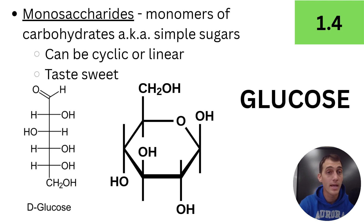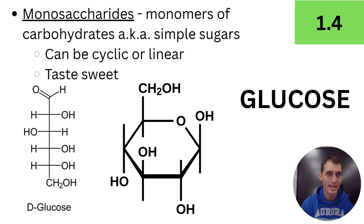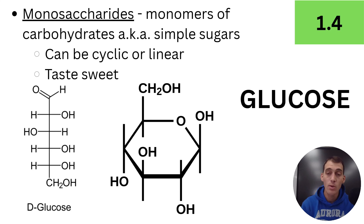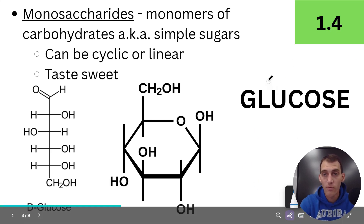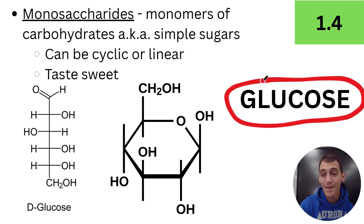Some of the main terms to know: the monomer — we talked about monomers and polymers in our last video, monomers are linked together to form polymers. Monomers of carbohydrates are what are known as monosaccharides. Mono meaning one, saccharide meaning sweet. So monomers of carbohydrates, also called simple sugars. Glucose is one right here — that's going to be mega important for the rest of time in this class. Glucose is an example of a monosaccharide.